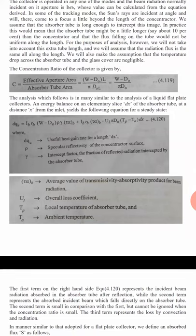The concentration ratio is an important characteristic of the collector. It is defined as the effective aperture area divided by the absorber tube area. The effective aperture area is (W minus d_o) times L, and the absorber tube area is pi times d_o times L. The L cancels, giving the concentration ratio C = (W minus d_o) divided by pi times d_o.